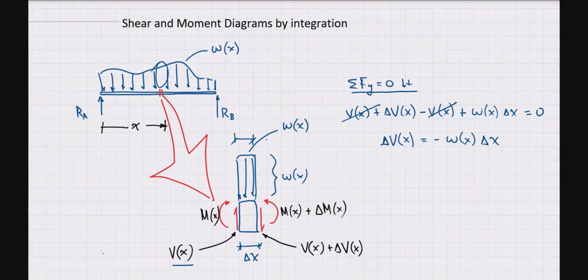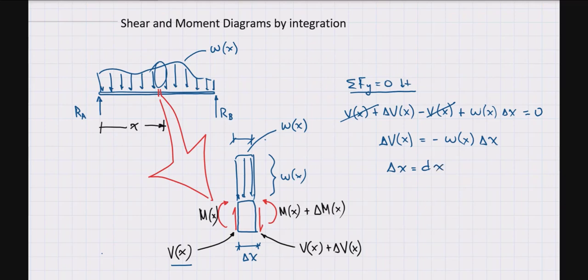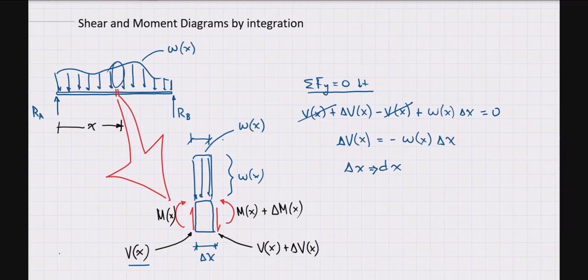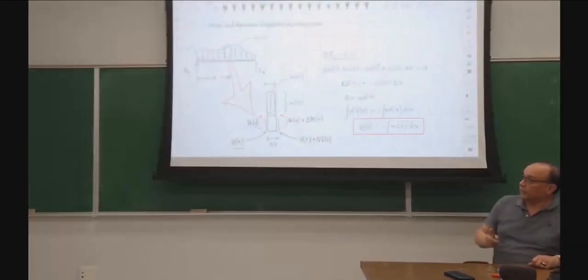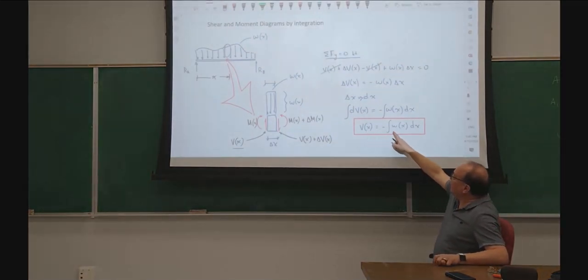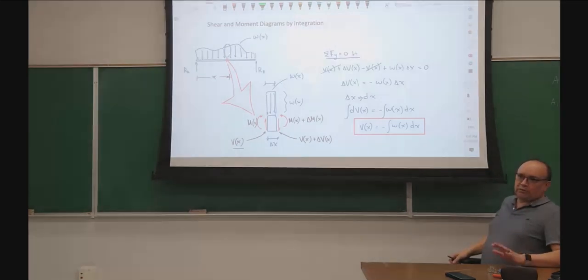Going from delta x to dx — taking the limit as delta x goes to zero — we have dV(x) = −w(x)dx. Integrating both sides, V(x) = −∫w(x)dx. That's our first result: you can get the shear by integrating the negative of the load.